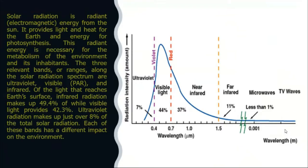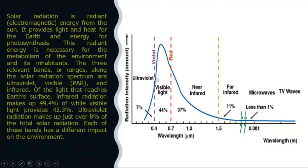From the Sun we receive solar energy in various forms like ultraviolet radiation, then visible light. From the spectrum, ultraviolet radiation has high energy because its wavelength is less. When we increase the wavelength we have visible light, which we also call photosynthetically active radiation.